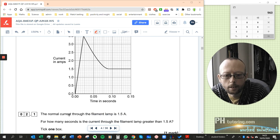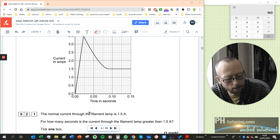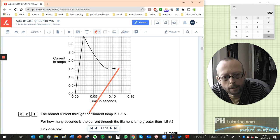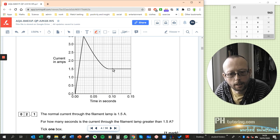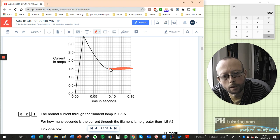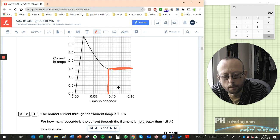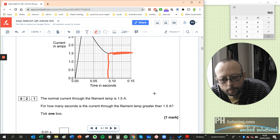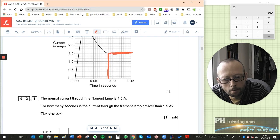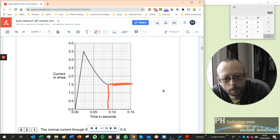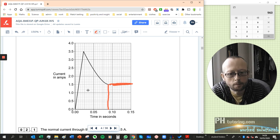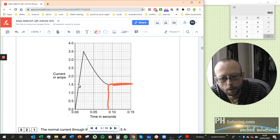It says the normal current through the filament lamp is 0.5 amps, so you can see that because it's this line here. So that's the normal current, and you can see that it begins around the normal current about here. It starts the normal current around about there. For how many seconds is the current through the filament lamp greater than 1.5 amps? You can see it's greater than 1.5 amps all the way from here to that point I just drew there.